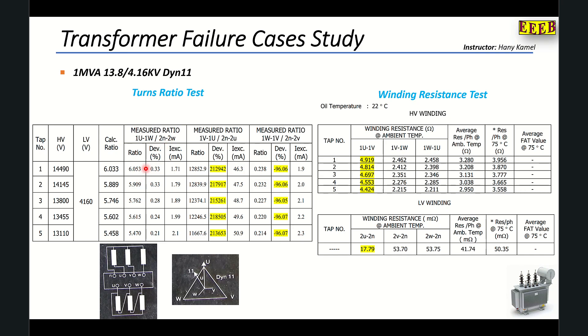This is the measured ratio, this is the error, and this is the excitation current. You can see the error is within the limit, so it is acceptable.